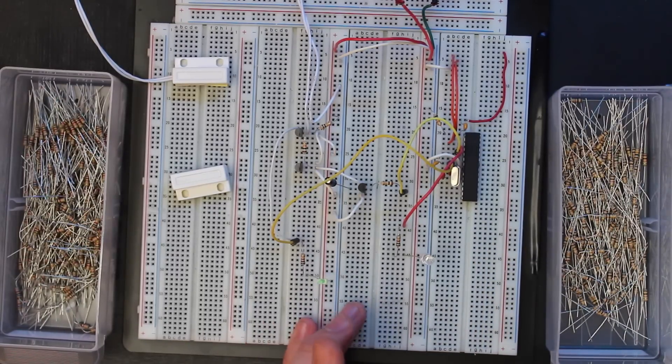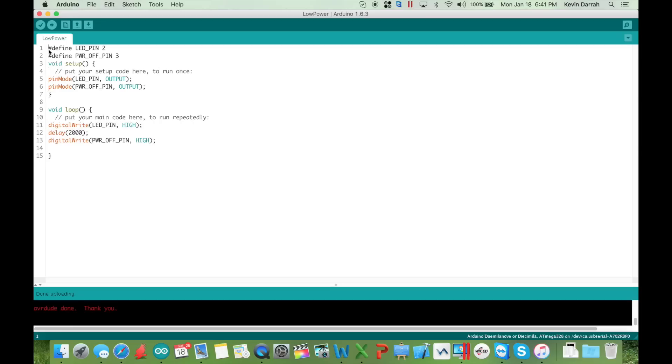then it boots up. You can see on the code over here we've got the LED pin defined on digital pin 2, the power off pin on digital pin 3, both set to outputs. In the loop, as soon as it boots up, the LED pin goes high, waits two seconds, then the power off pin goes high. This actually kills power to the Arduino. That's